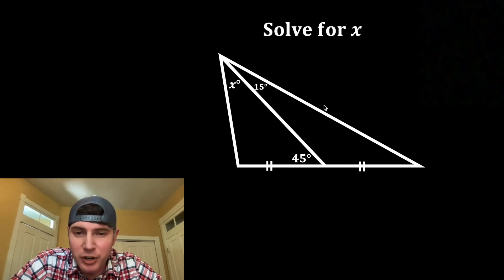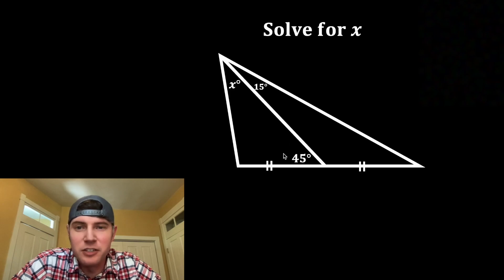Hey guys, this looks like a fun one. We're given some triangles with some angles. This is congruent to this, and they give us the values of these two angles, and they're asking us to solve for x.